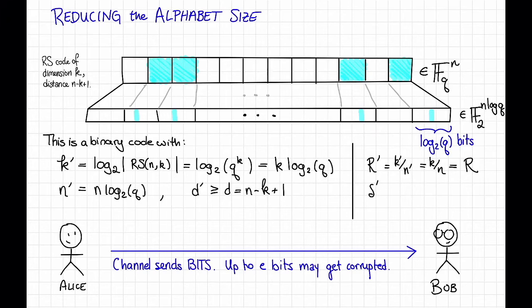The relative distance, however, is going to change. So the relative distance is d prime divided by n prime, which is going to be d divided by n log q. Or at least d divided by n log q is the best bound that we can get on it. It might be that the real distance d prime is actually bigger than d, but we don't know that. So let's assume the worst and assume it's this.